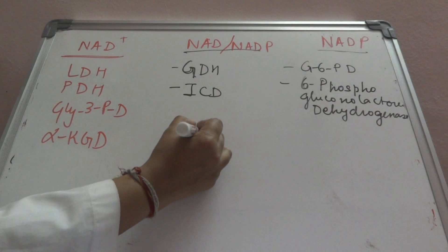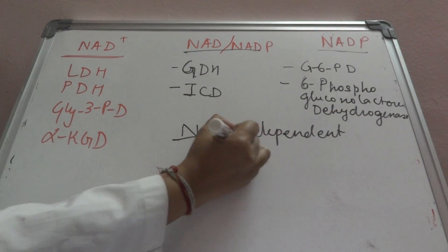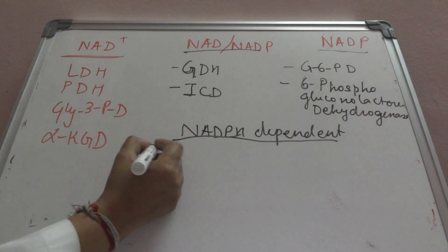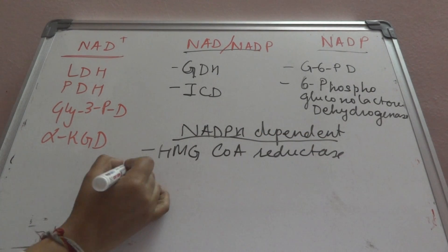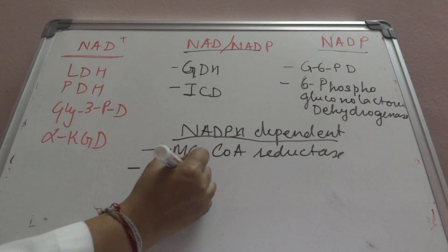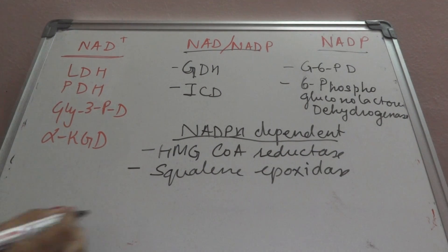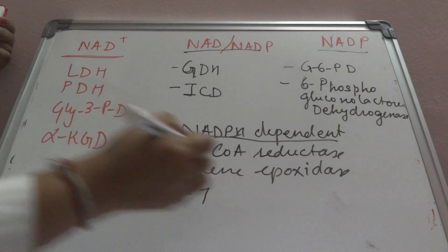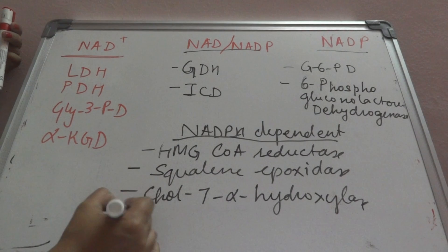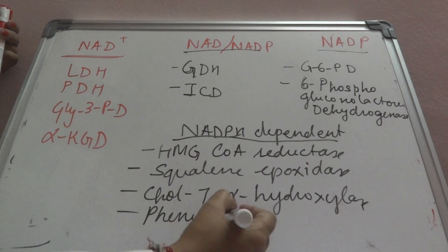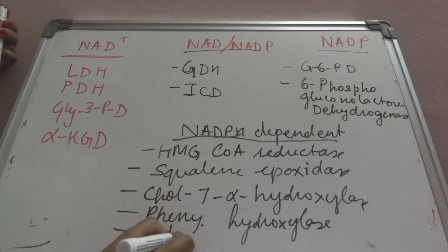The NADPH-dependent reactions are mostly in cholesterol synthesis and steroid synthesis: HMG-CoA reductase, squalene epoxidase, cholesterol 7-alpha hydroxylase, phenylalanine hydroxylase, and dihydrofolate reductase can also use NADPH.